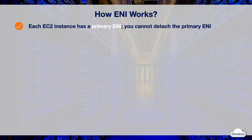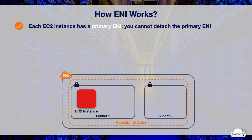Each EC2 instance has a default network interface which is the primary ENI. The primary ENI is automatically attached to the instance when you create the instance. You cannot detach the primary ENI from the instance.